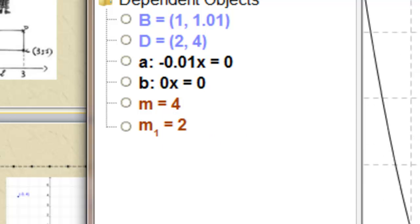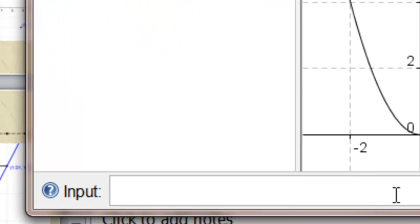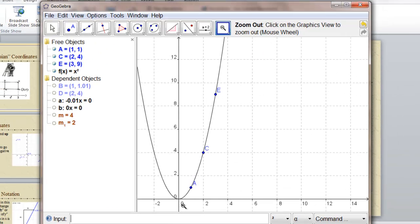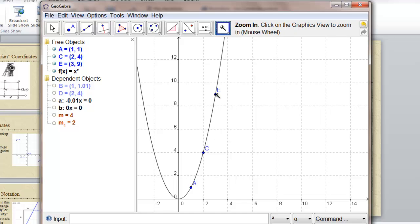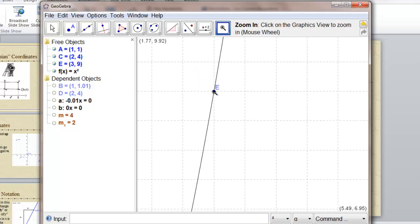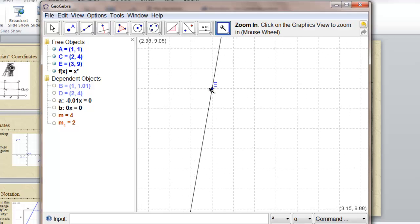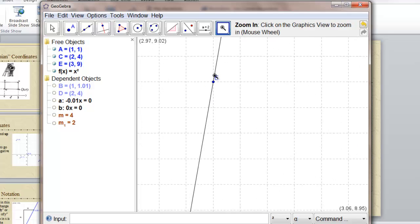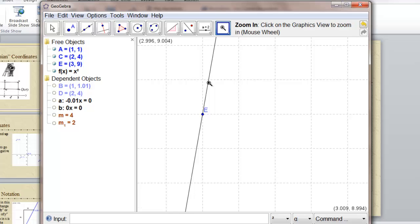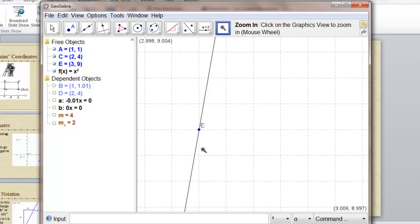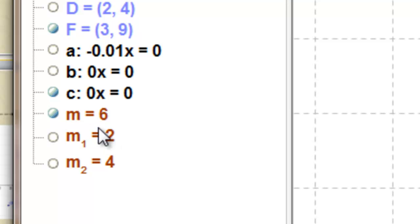So we'll find the slope of the curve at one more point, and then we'll look for a pattern. We'll stick with whole numbers and look at the point (3,9). Zoom in. Okay. This one, it's not so easy to count the squares, but if we make our approximation line and ask for the slope, it tells us the slope is six.